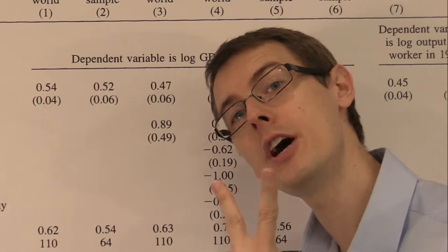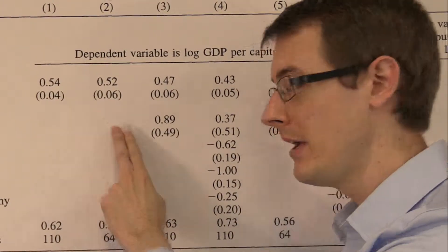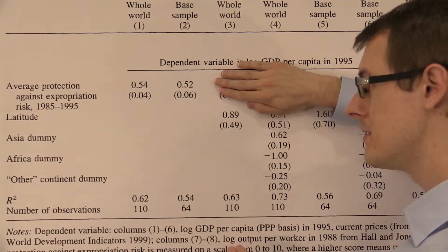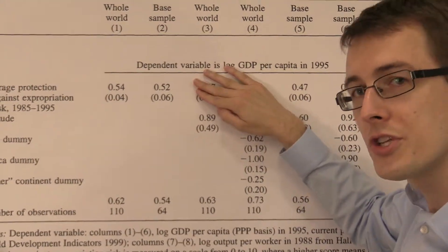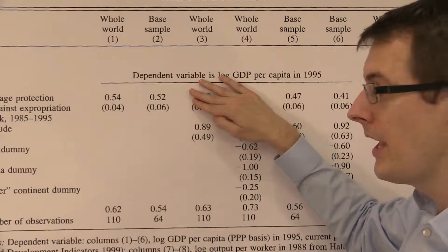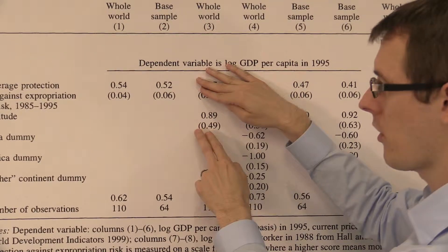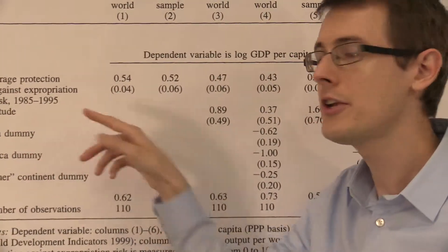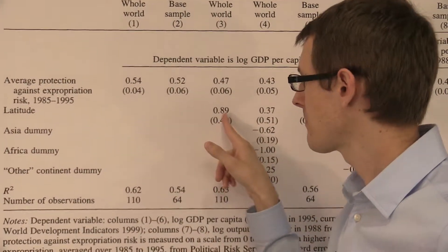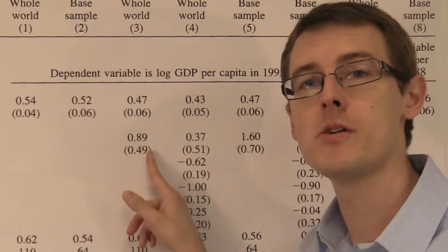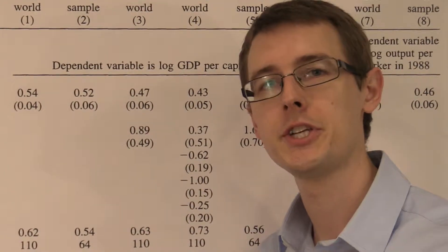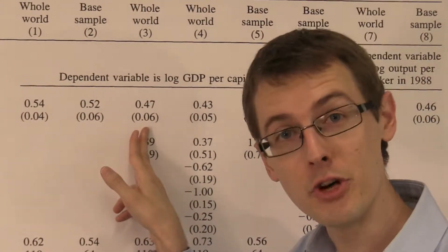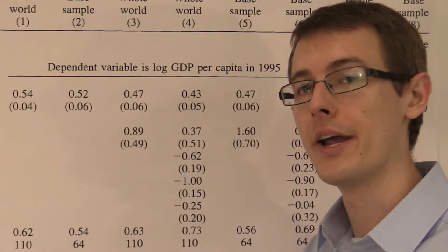We also get another number — two numbers from this specification, whereas before we only had one. This second number tells us: if we look at countries that have roughly the same property rights, but some are close to the equator and some are farther, there tends to be a relationship between how close you are to the equator and economic development. As latitude increases — as you get farther from the equator — you tend to have higher economic development. This confirms, in the data at least, one claim that Jared Diamond made about geography mattering. But the point of this paper is that property rights also matter — both tend to be positively related to economic development.